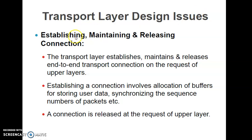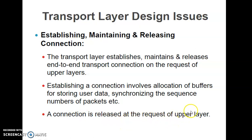The transport layer establishes, maintains, and releases end-to-end transport connections on the request of the upper layers. Establishing a connection involves allocation of buffers, storing user data, and synchronizing sequence numbers of packets. The connection is also released on the request of the upper layer — the one that starts the connection also releases it.